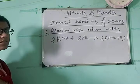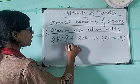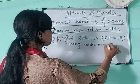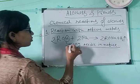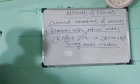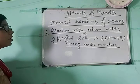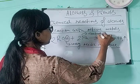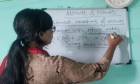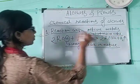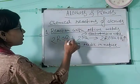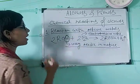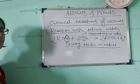Why does this reaction happen? This reaction happens because this hydrogen is very acidic in nature. Active metals are generally electropositive metals — they readily undergo any kind of reaction. Sodium is able to replace this hydrogen because it is very acidic in nature.